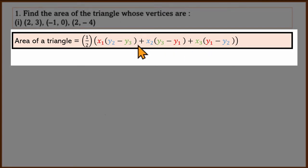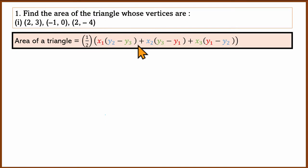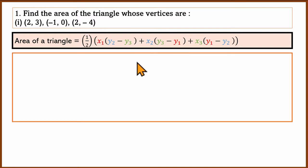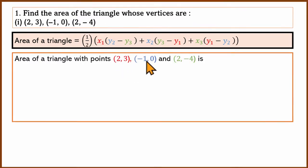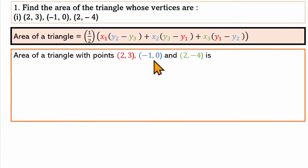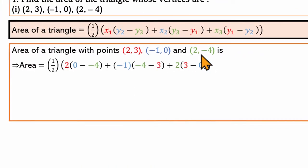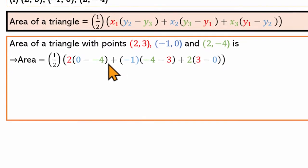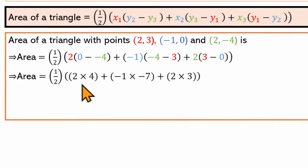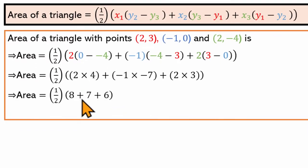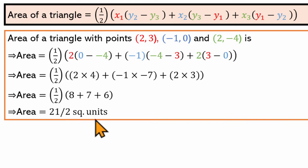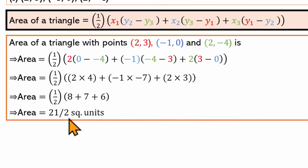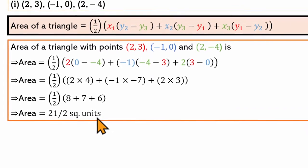We choose colors for the points: the first point is red, the second point is blue, and the third point is green. Using mostly simple arithmetic, the final answer is 21 by 2 square units.